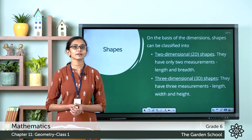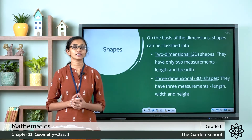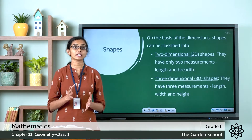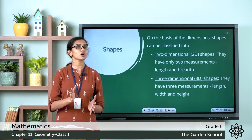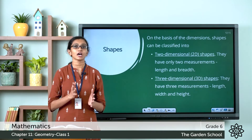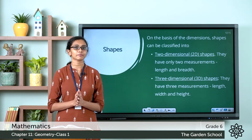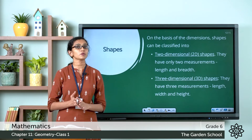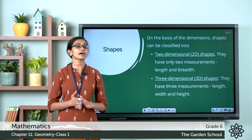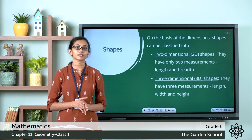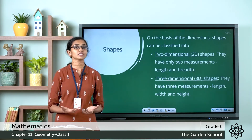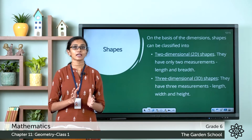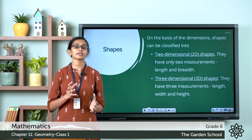What about three-dimensional or 3D shapes? Three-dimensional shapes, or solid shapes, have got three dimensions: the length, the width or breadth, and the height or depth. Since 3D shapes have got three dimensions, they occupy space.